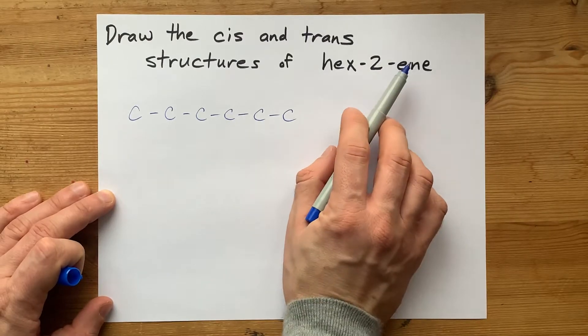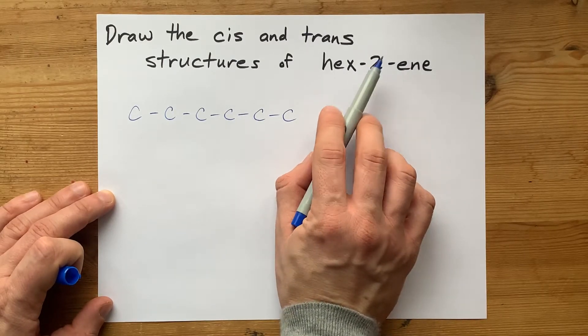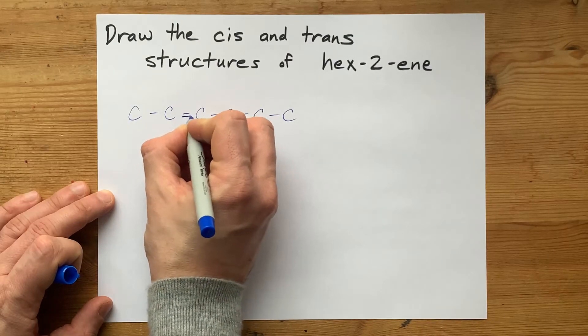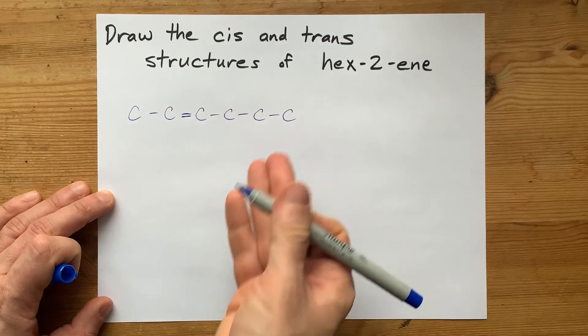2-ene means that there is a double bond starting at carbon two. That's carbon one, two. So I'm going to make my double bond start at carbon two, and go to the next carbon, carbon three.